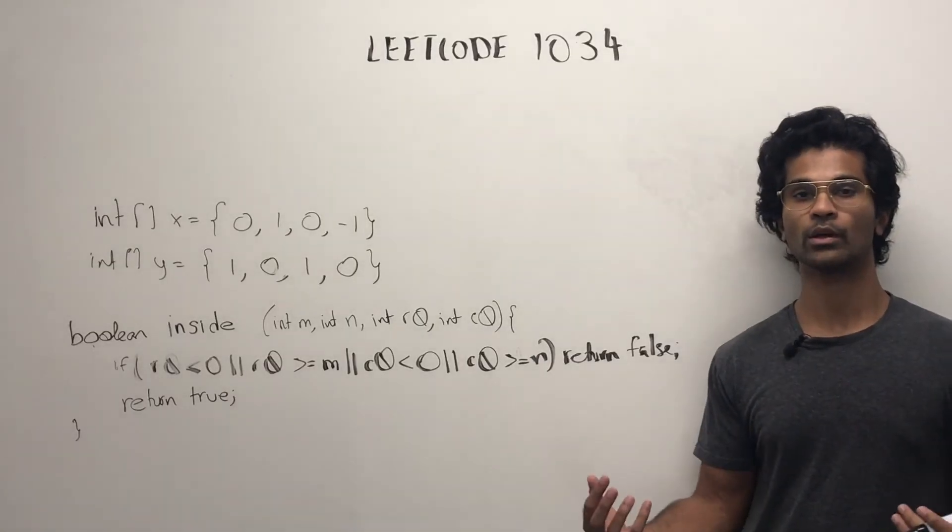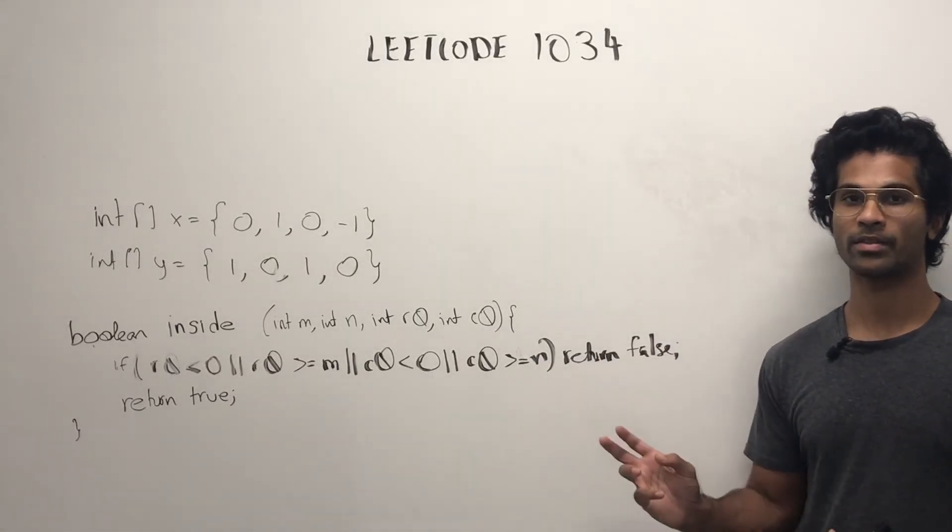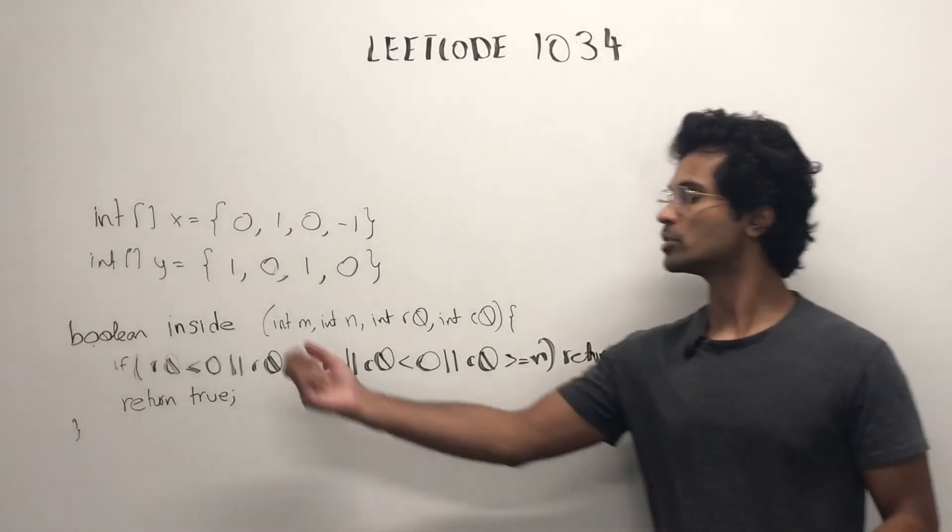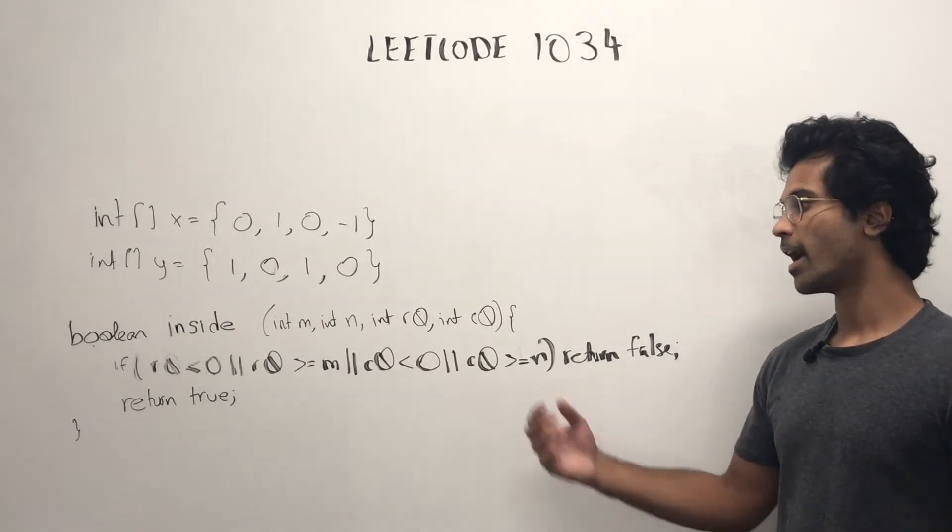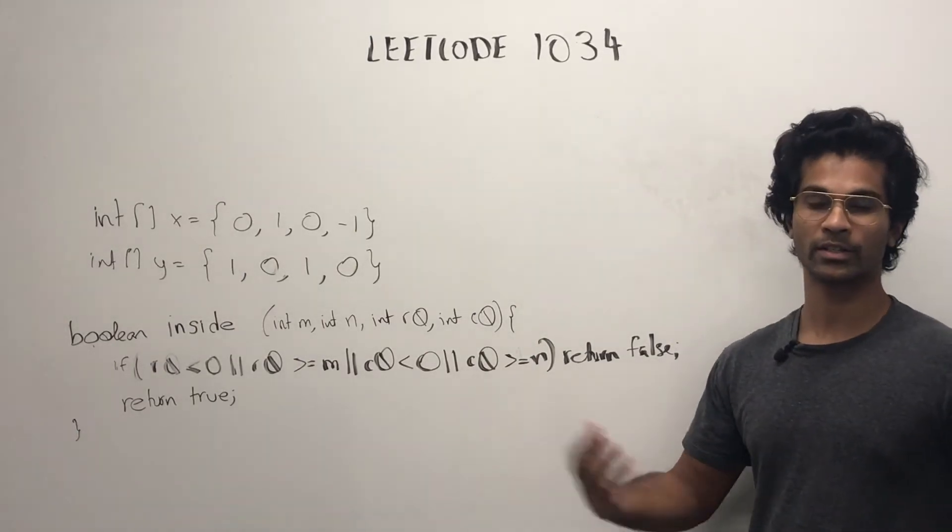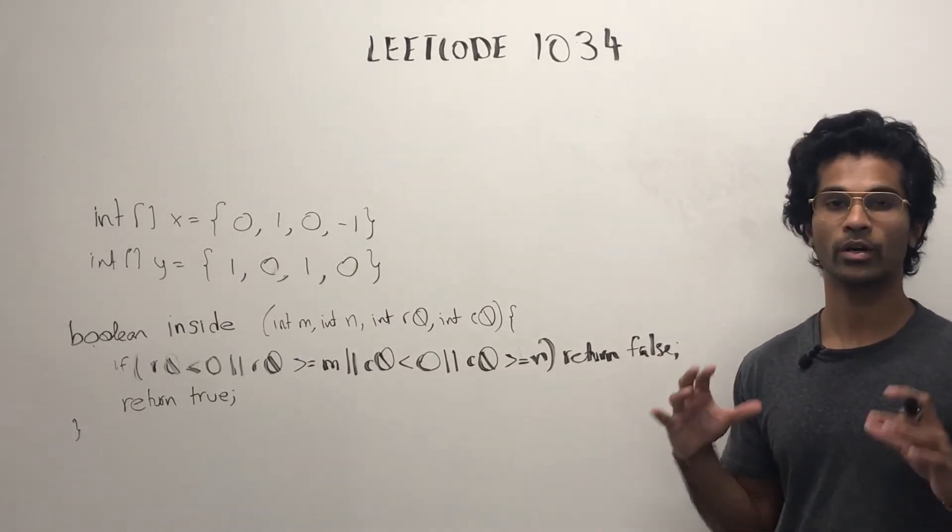Before we look at the meat of the code, this is some helper method and some helper variables. So, this is just to go up, down, left, and right when we iterate through our grid. And this is just a Boolean check to see if we're within the bounds of the input grid or not.